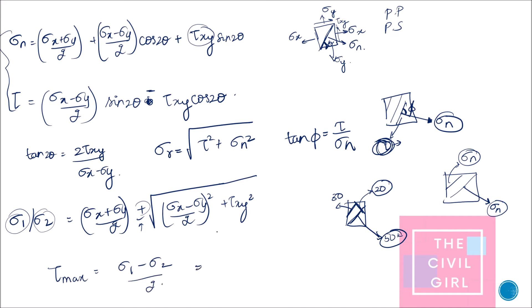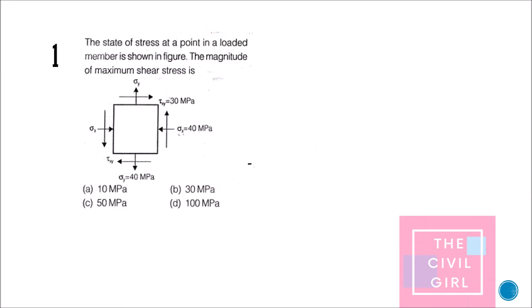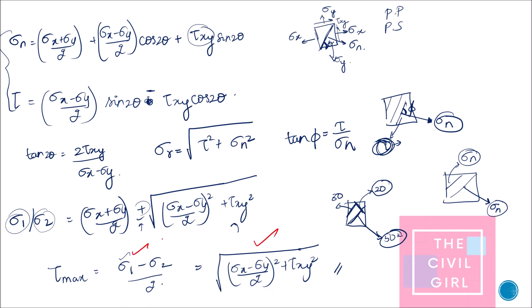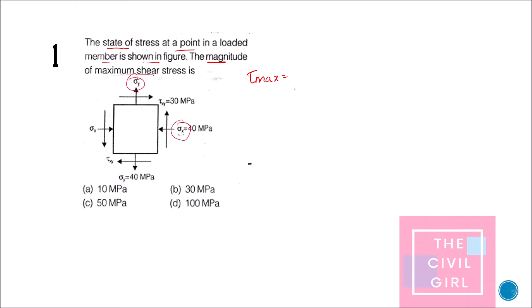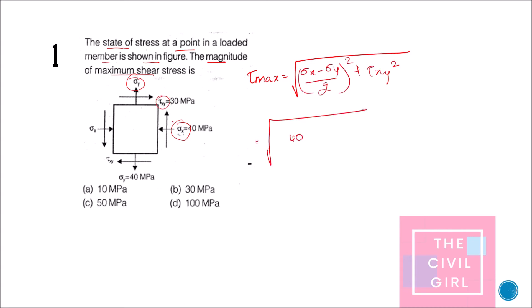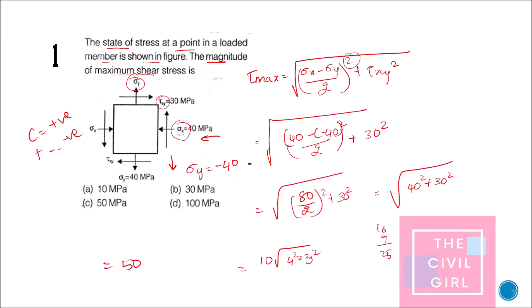The questions here will be straightforward. Question 1: The state of stress at a point in a loaded member is shown in the figure — find the magnitude of maximum shear stress. We know tau max; we can use either the principal stress formula or the normal stress formula. Since sigma x and sigma y are given, we use the second formula. Sigma x is in compression and sigma y is in tension, so sigma y equals minus 40. After substituting and squaring, the answer is 50 MPa — option C.